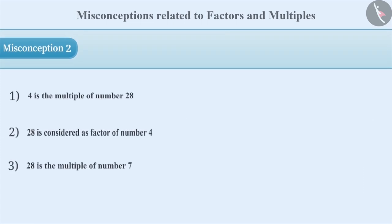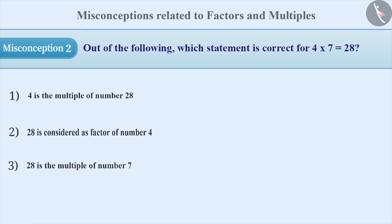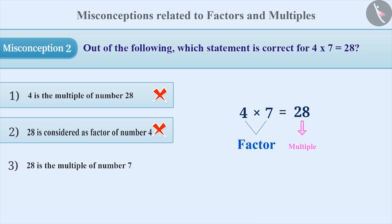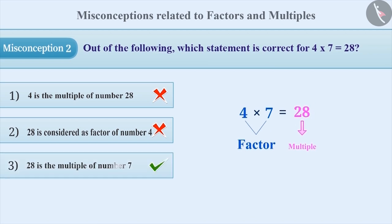Misconception 2. Out of the following, which statement is correct for 4 multiplied by 7 is equal to 28? Option 1: 4 is the multiple of number 28. Option 2: 28 is the factor of number 4. Option 3: 28 is the multiple of number 7. Due to the confusion in the concept of factors and multiples, sometimes 4 is mistaken as a multiple of 28, and 28 is considered as a factor of 4. This misconception leads to incorrect option 1 and option 2. The multiple is the outcome of the product of the factors. If 4 multiplied by 7 equals 28, then 4 and 7 are the factors of 28, and 28 is the multiple of 4 and 7. Therefore, the correct answer is option 3: 28 is the multiple of number 7.